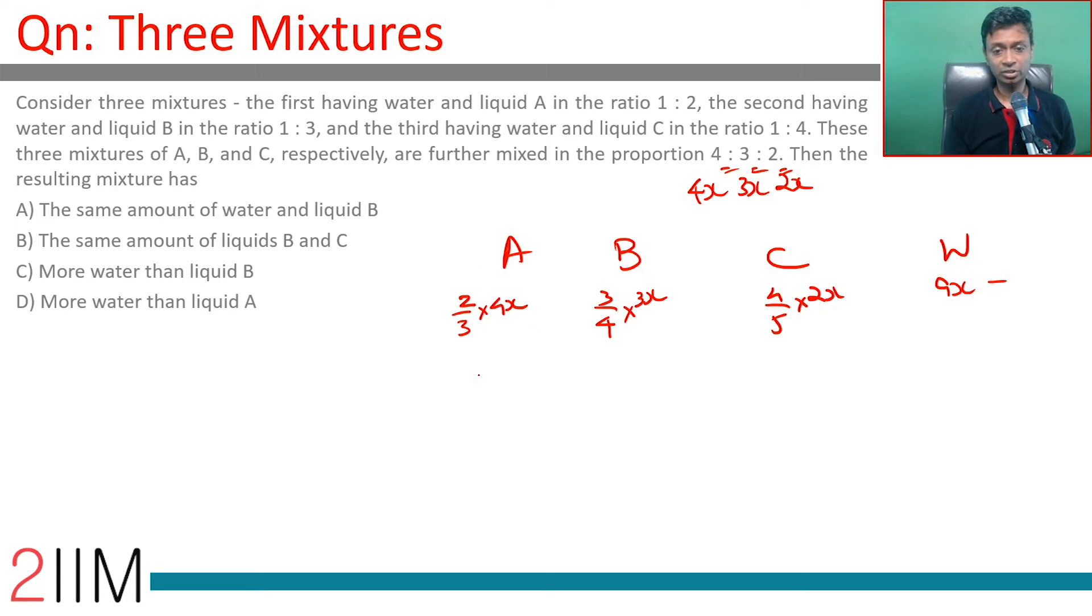So this is 8 by 3x, 9 by 4x, 8 by 5x - so 8 by 3, 9 by 4, 8 by 5. Then water is the remaining part. Now we have to go with the answer choices. This is little more than two, little more than two, little less than two. If we add all this up should be close to six, water will be close to 3x.